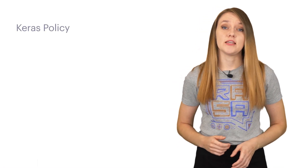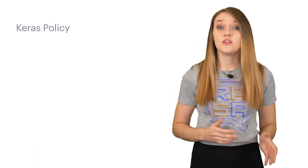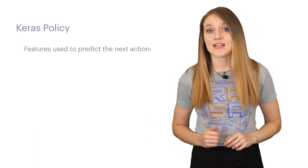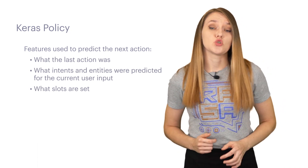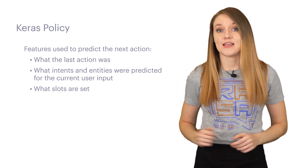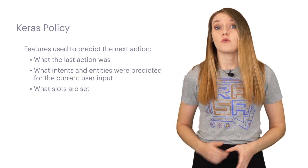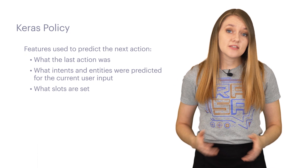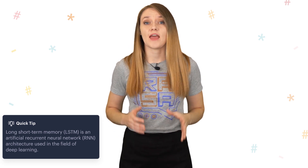Keras policy: this policy uses the neural network implemented in the Python deep learning library called Keras to predict the next action. It takes into account a lot of details when predicting, such as what the last action was, what the intent and extracted entities were from the current user input, and what slots are set at the moment. In addition, this policy takes into account previous states of the dialogue. How many of those states are featurized is defined using the max history parameter. The default architecture is based on LSTM, but you can change this by overriding the architecture with a custom one.